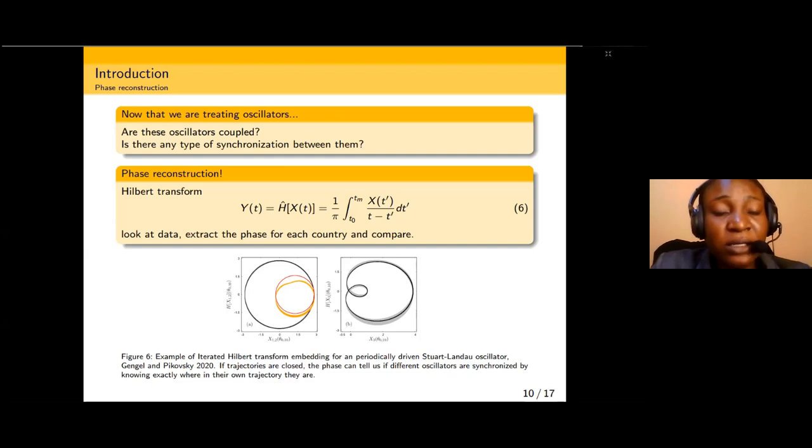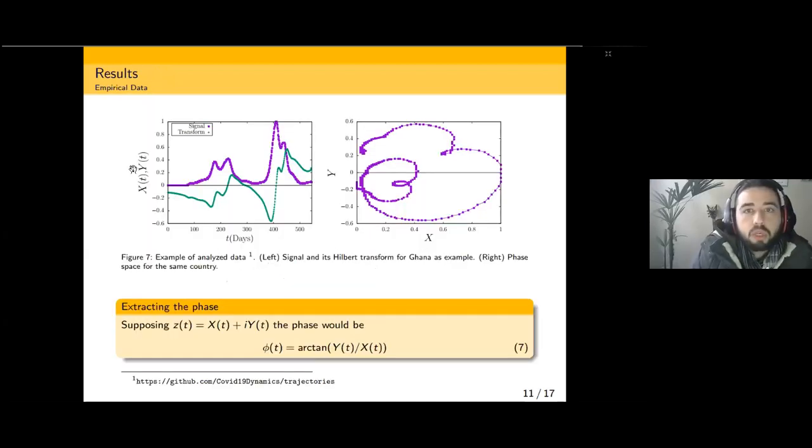For the phase reconstruction, we are going to use the Hilbert transform. In equation six, y(t) equals the Hilbert transform of x(t). We're going to look at the data, extract the phase for each country, and compare. Figure 6 shows the example of iterative Hilbert transform embedding from a periodically driven structure.